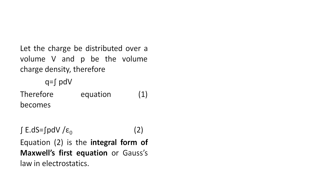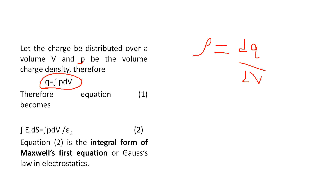Let the charge be distributed over a volume V, and rho is the volume charge density. By definition, the relation between charge, rho, and volume element is Q equals the integral of rho dV. The charge density rho equals dq by dV. If we take a very small volume dV, a small charge is placed in that volume, so charge density equals dq by dV. Therefore equation 1 becomes: the closed integral of E dot dS equals the integral of rho dV by epsilon-naught.